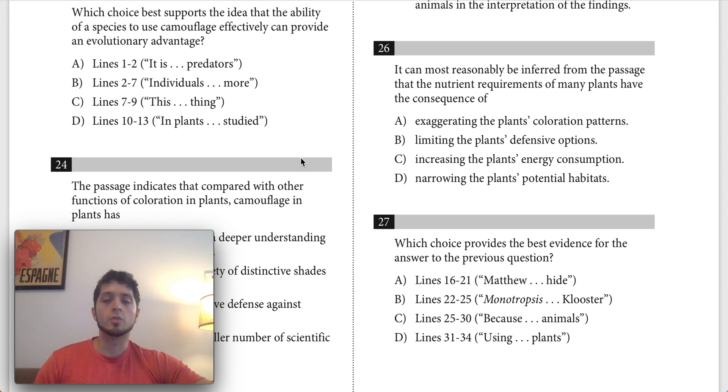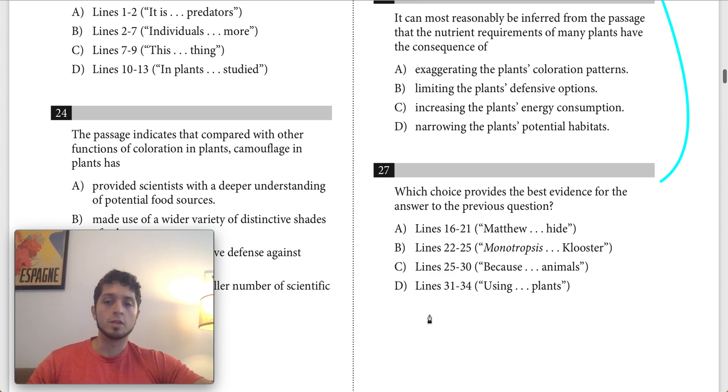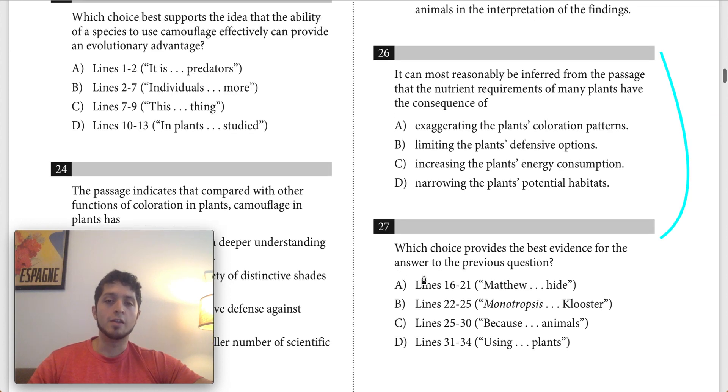Today we're going to be solving questions 26 and 27 from the SAT number 17. This is the April QAS test from 2019. The first thing we should notice is that questions 26 and 27 are paired questions, and the best way to solve these is to start by reading the question for 26, then going through the answer choices for 27, picking one of these answer choices and using that to answer question 26.